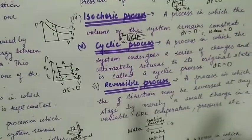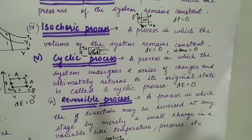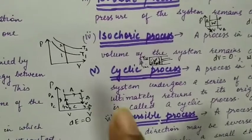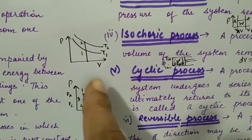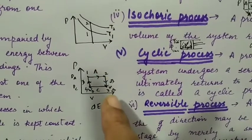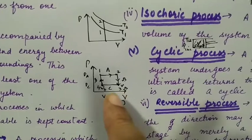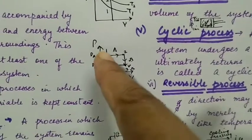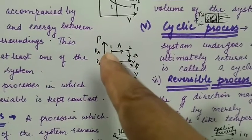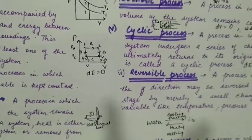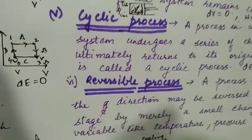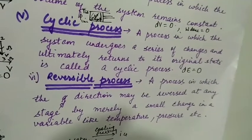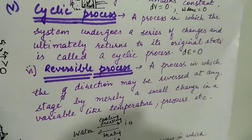Cyclic process: a process in which the system undergoes a series of changes and ultimately returns to its original state is called a cyclic process. For example, here state 1 through path A goes to state 2, then through path B to state 3, then through path C goes to 3, then through path D to 4, then through path 1. So after the changes, the final state is the initial state. So this whole cyclic process - the change in energy will be zero. A process in which the system undergoes a series of changes and ultimately returns to its original state is called a cyclic process.